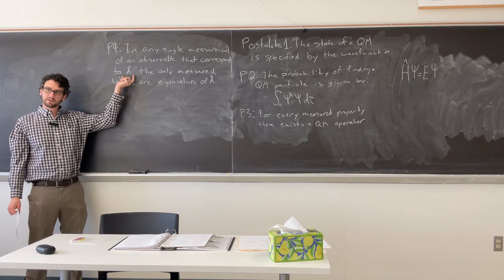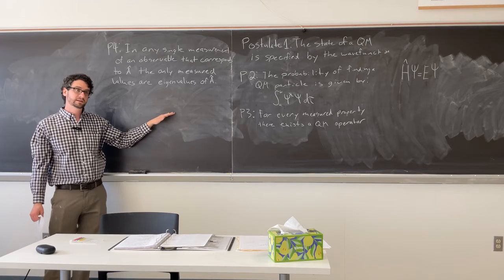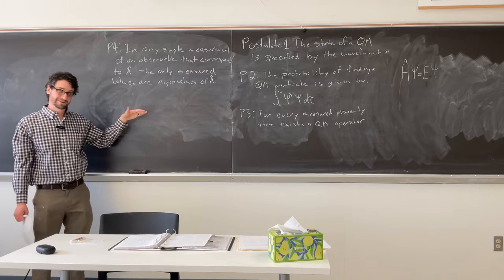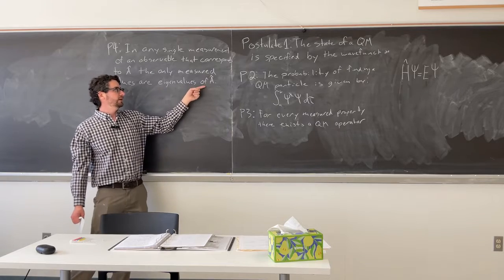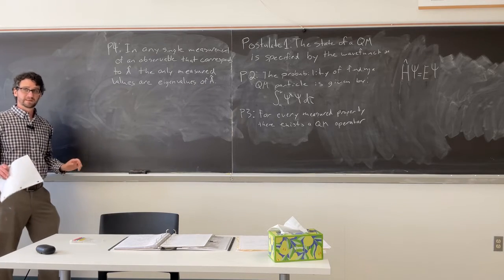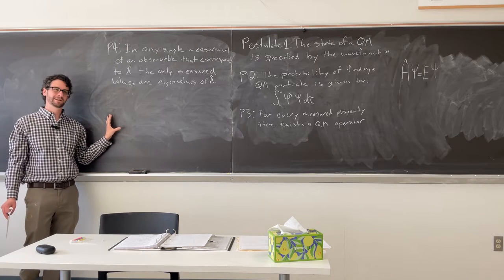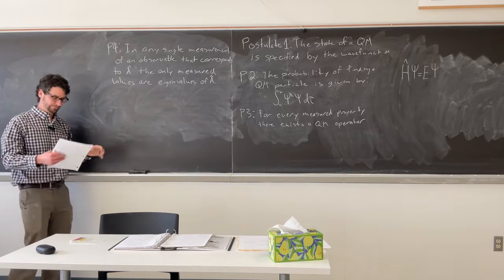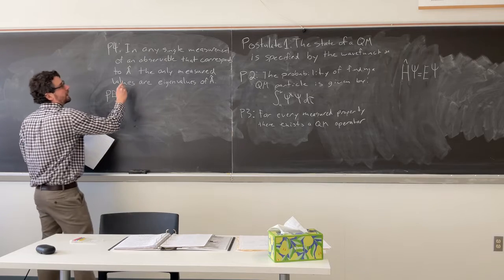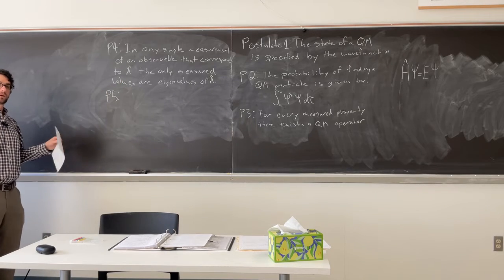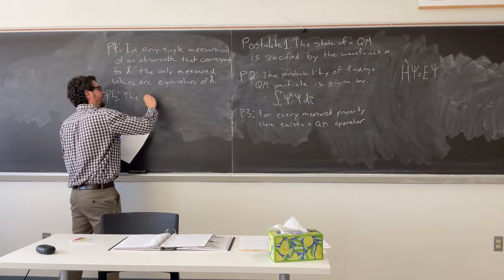So, if you have operator a, and you operate on a wave function, sometimes you can get multiple constants. Seems weird, it's just sometimes you see weird math. And the only measured values you can get are eigenvalues of a. Does that make sense? Or at least can you understand that statement? It might not make sense right now. So, that corresponds to a single measurement. But what if we look at an average?